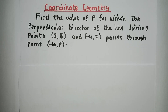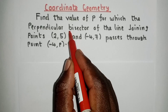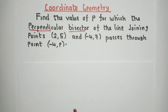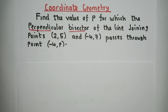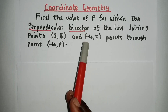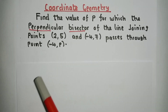It is very important to understand what these two words mean. When we say perpendicular, if two lines are perpendicular to each other, their gradients, when you multiply them, give you negative 1. And when we say bisector, it means it is passing through the center.